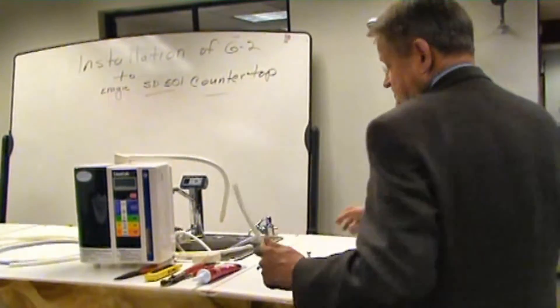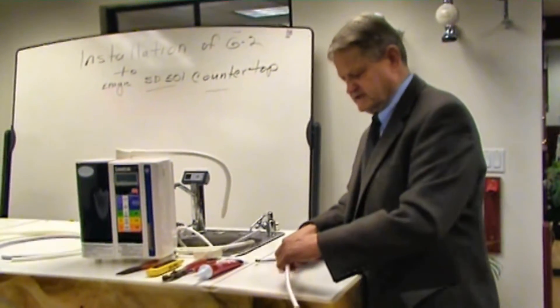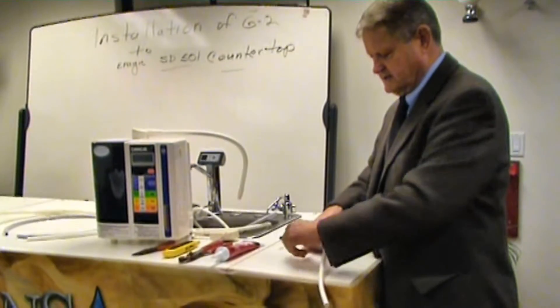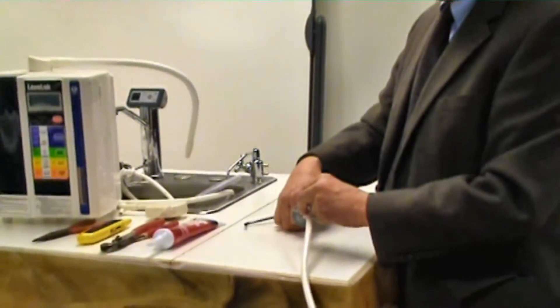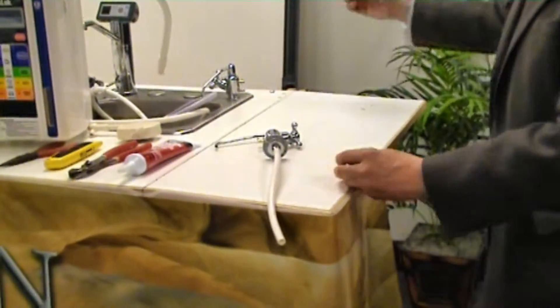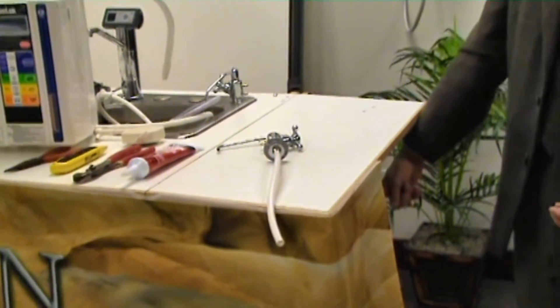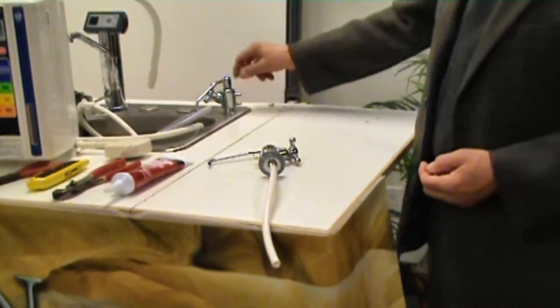The 3/8 hose that we use goes on here like this with this compression valve going on and tightening up. This, in turn, goes down to our H3 filter which is underneath the counter.